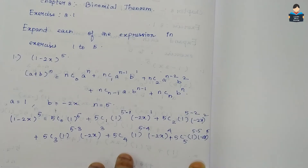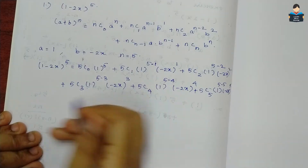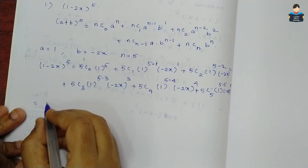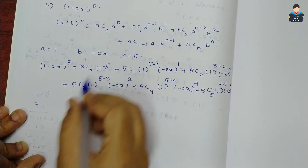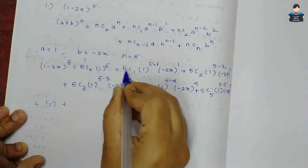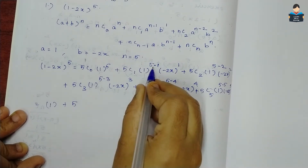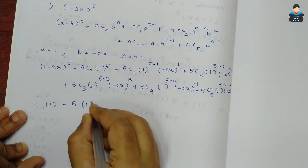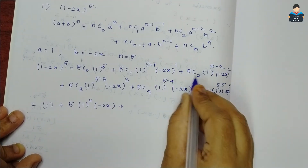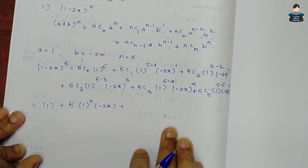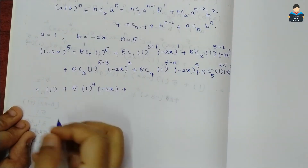Now we solve each term one by one. 5C0=1, so 1·1^5=1. Then 5C1=5, so 5·1^4·(-2x). Next we compute 5C2 by substituting into the formula n!/(n-r)!·r!.